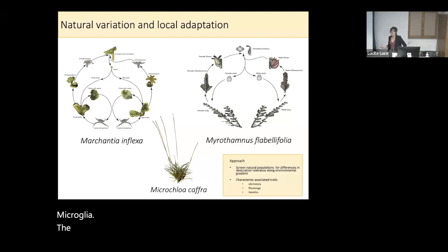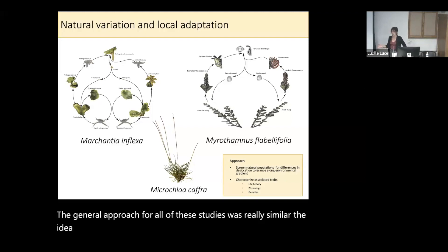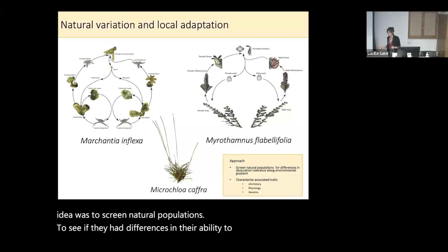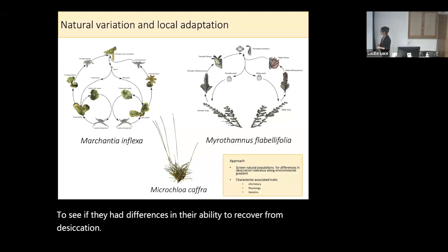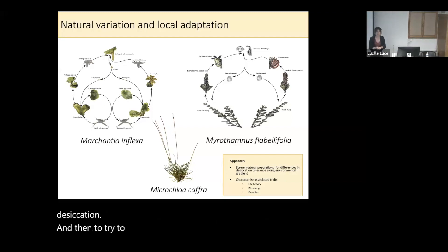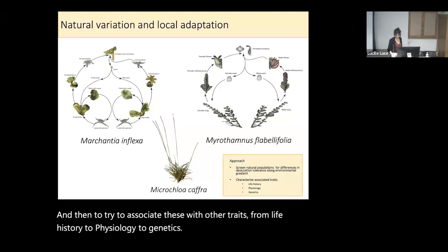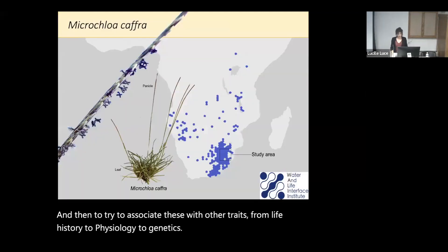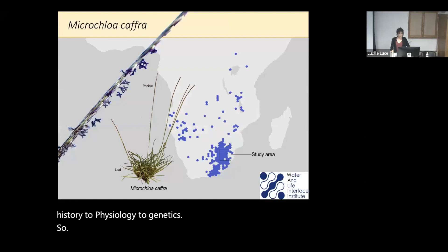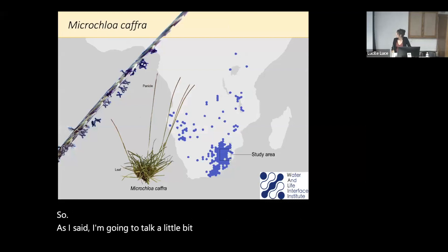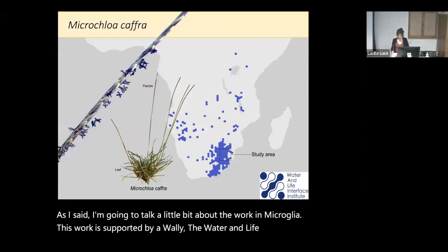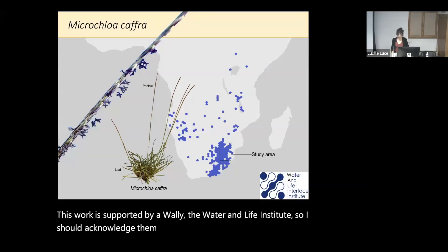The general approach was to screen natural populations to see if they had differences in their ability to recover from desiccation, and then to try to associate these with other traits from life history to physiology to genetics. I'm going to talk about the work in Microfloa, which is supported by WALI, the Water and Life Institute.